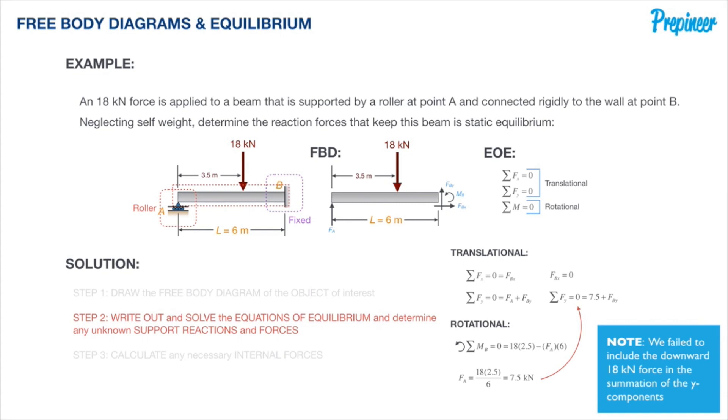For rotational, we're going to take the moment about B. We're trying to eliminate one of the unknowns, and what better place to do it than at the fixed support side. The moment created here—I'm using counterclockwise as you can see with that notation as a positive direction.